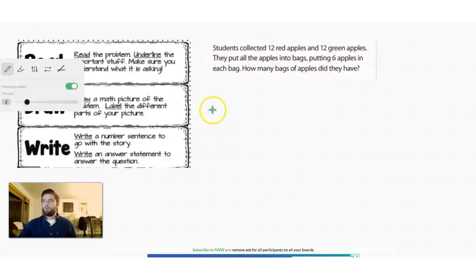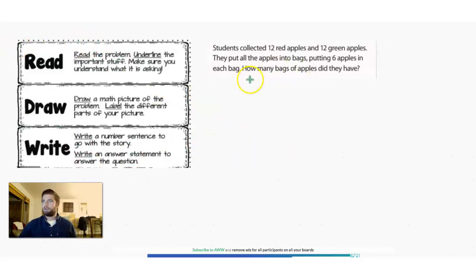Okay. We're back with our third problem here to practice the read, draw and write strategy. Here we go. Let's make sure to underline the important parts just like we did in the last two. Students collected 12 red apples and 12 green apples. Probably important.